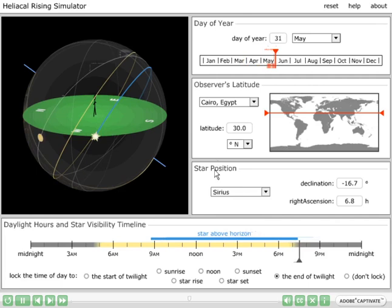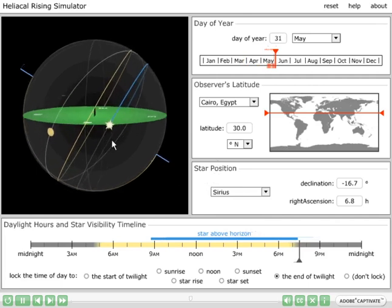Right around May 31st, we see that the star Sirius is setting right at the same time that twilight is ending, so we've reached the limit for which Sirius will be visible in the nighttime sky.